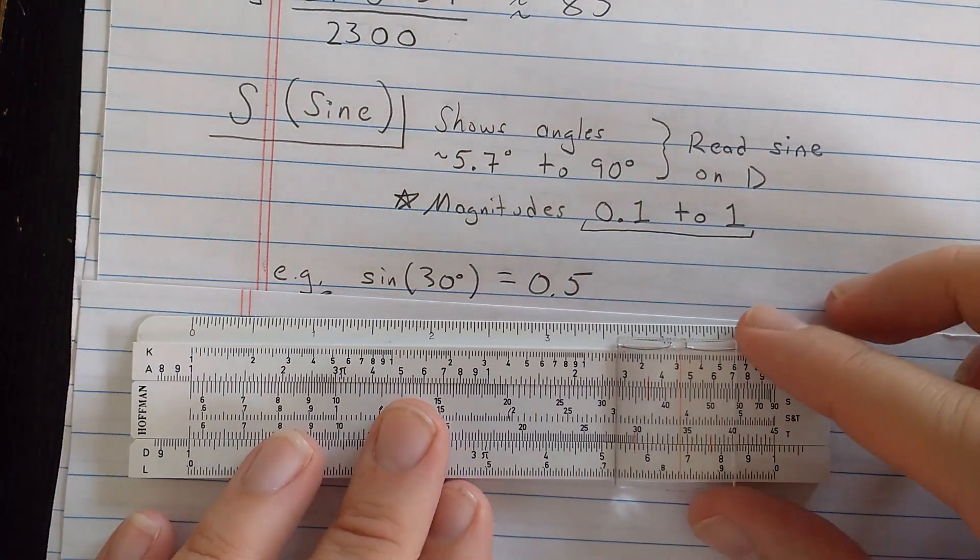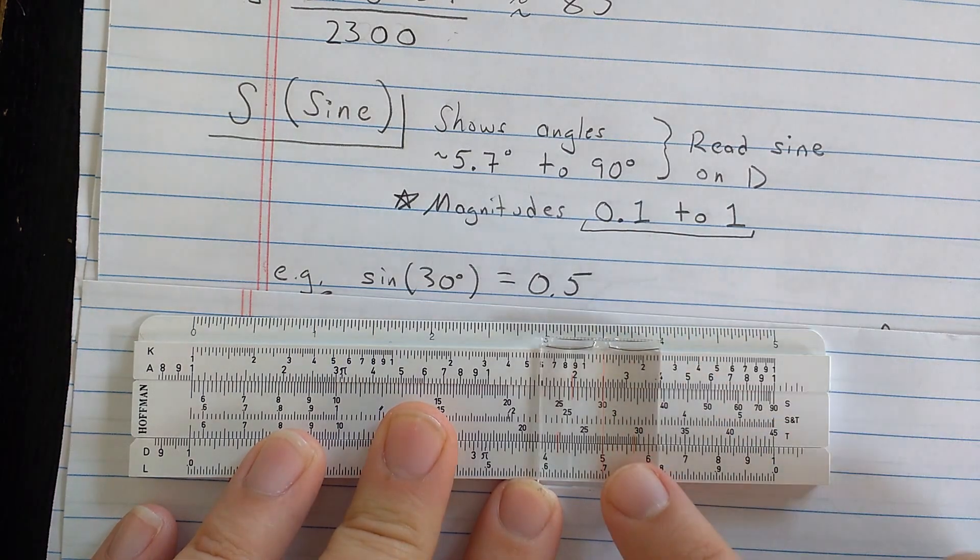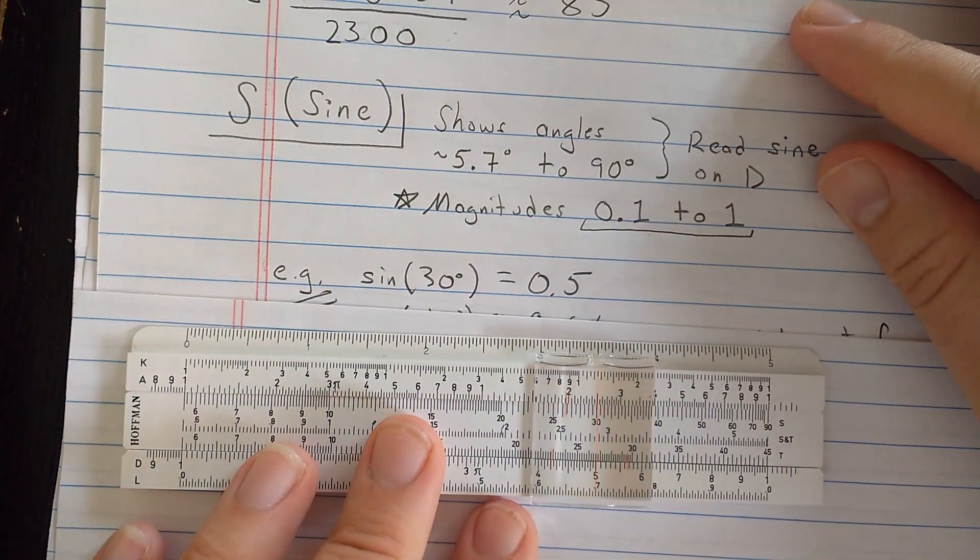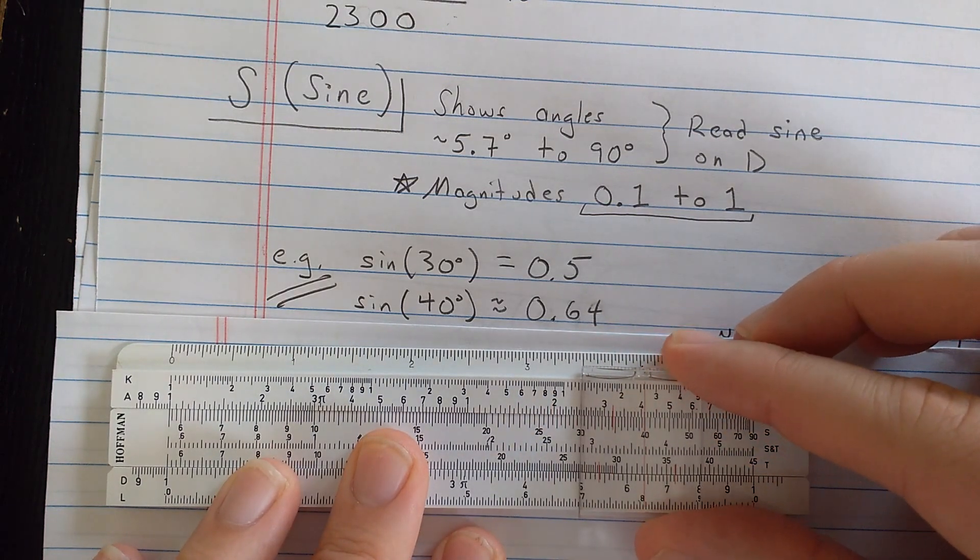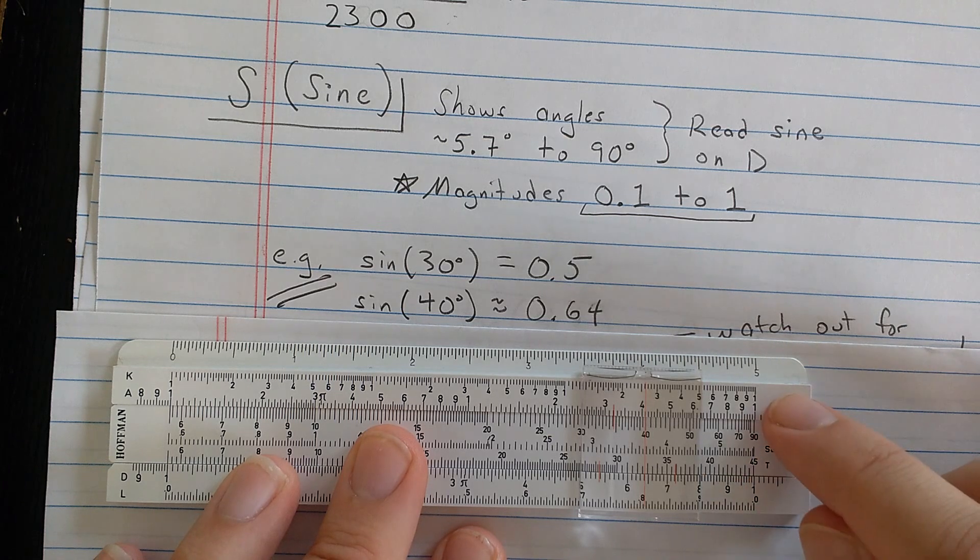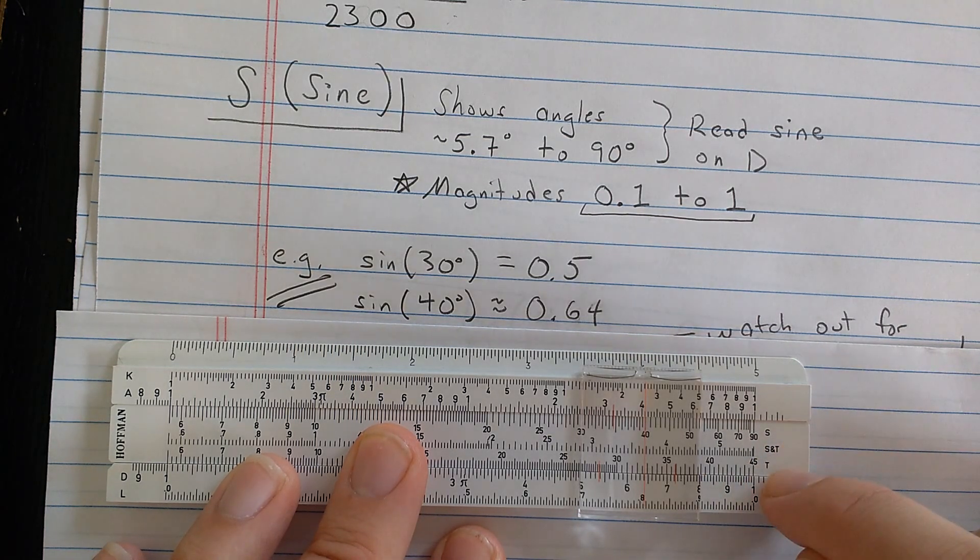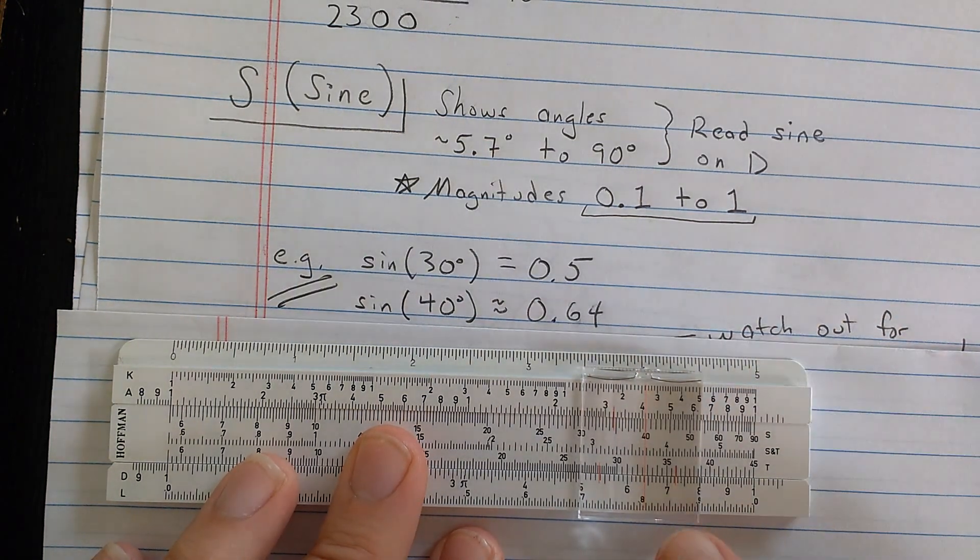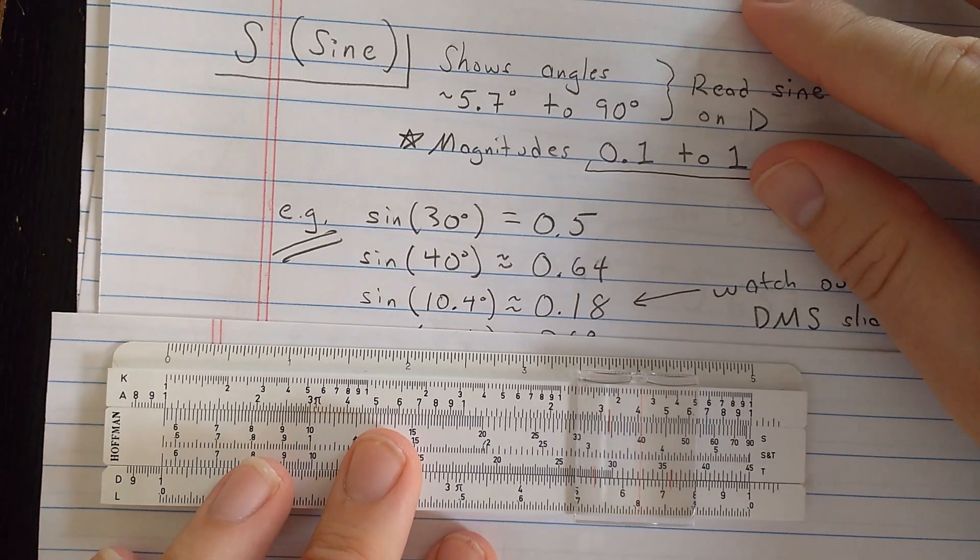So let's do some exercises here. If I set the cursor to 30 degrees here, then I read the correct answer 5, or 0.5, because I use this range. We know that's correct. If I set it to 40 degrees, I need to make sure I keep the slide aligned, unless your slide rule has an S which is fixed with the D, or they're both on the slide, the S and the C. So being careful to keep it aligned, I set 40 degrees here, and I read the sine about 64 here, so 0.64.